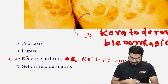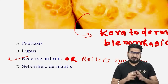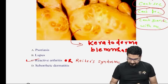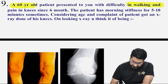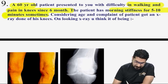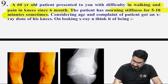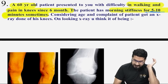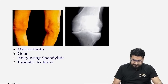In psoriasis, psoriatic arthritis can develop using CASPAR criteria. Lupus arthropathy (Jaccoud's arthropathy) becomes deforming over time. Seborrheic dermatitis affects facial areas, not palms and soles. Next: 60-year-old with knee pain and morning stiffness of five to ten minutes — morning stiffness of five to ten minutes should not mislead you toward rheumatoid arthritis, which requires more than 30 minutes of morning stiffness.